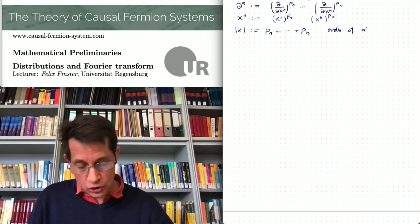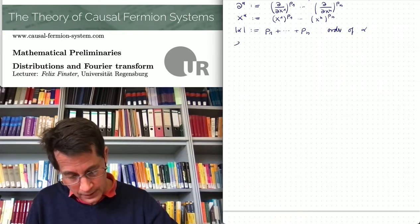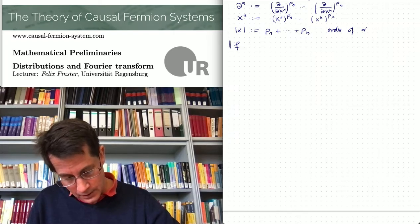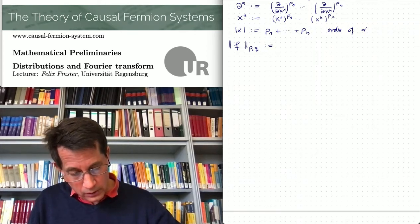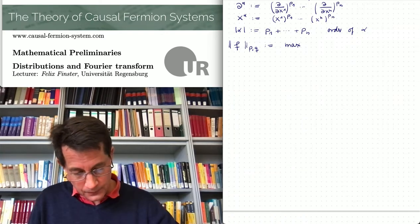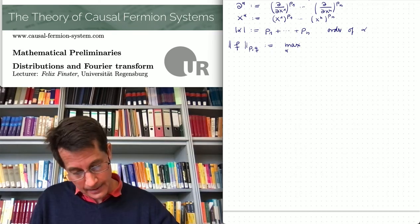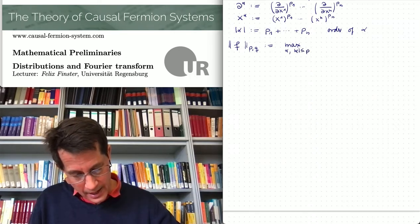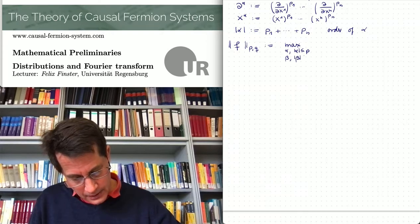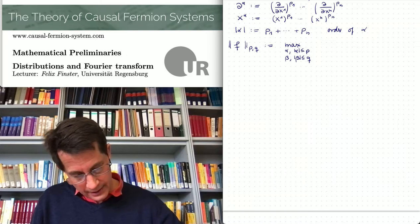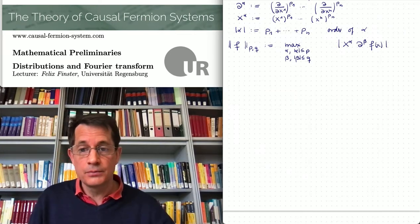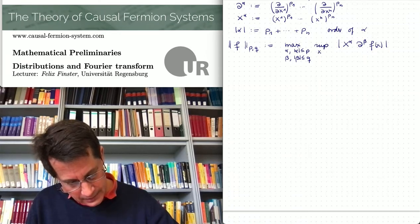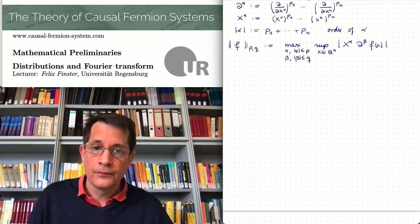Now we introduce the so-called Schwartz norms. Suppose we have a function f on R^n. Then its (p,q)-norm is defined by taking all multi-indices alpha of order at most p, and all multi-indices beta of order at most q, and then taking the supremum over x in R^n of the absolute value of x^alpha times d^beta f(x).